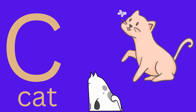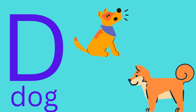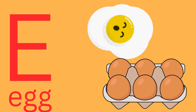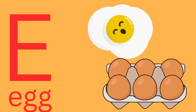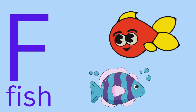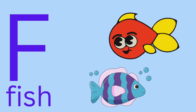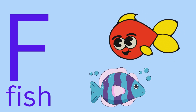D is for dog. Dog. E is for egg. Egg. F is for fish. Fish.